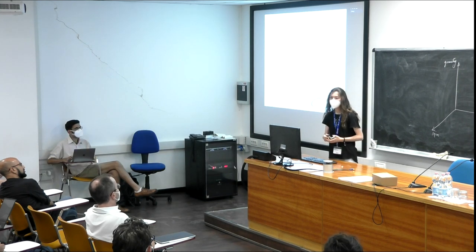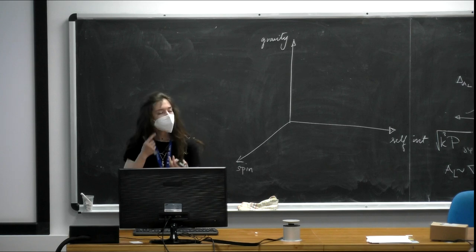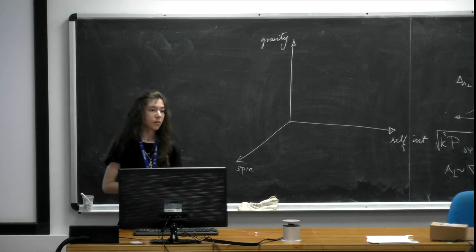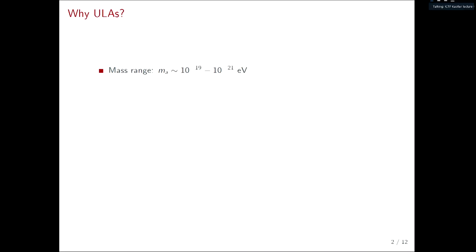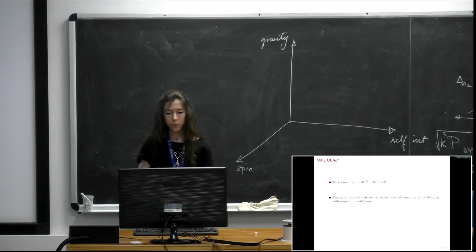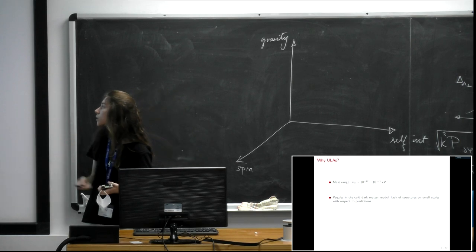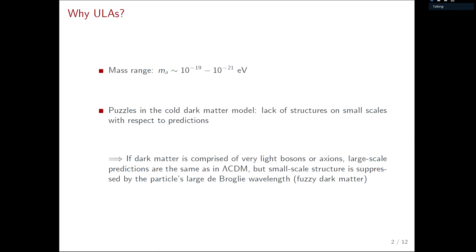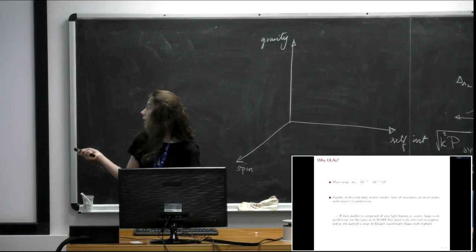Hi everyone, I am Eleanor Aventan from Padova. My project focuses on a particular dark matter candidate: ultralight axion fields, in the mass range of about 10^-19 to 10^-21 eV. This naturally provides a solution to one of the puzzles in the cold dark matter model — it naturally washes out power on small scales comparable to the de Broglie wavelength of the field. This is termed fuzzy dark matter, or wave dark matter.